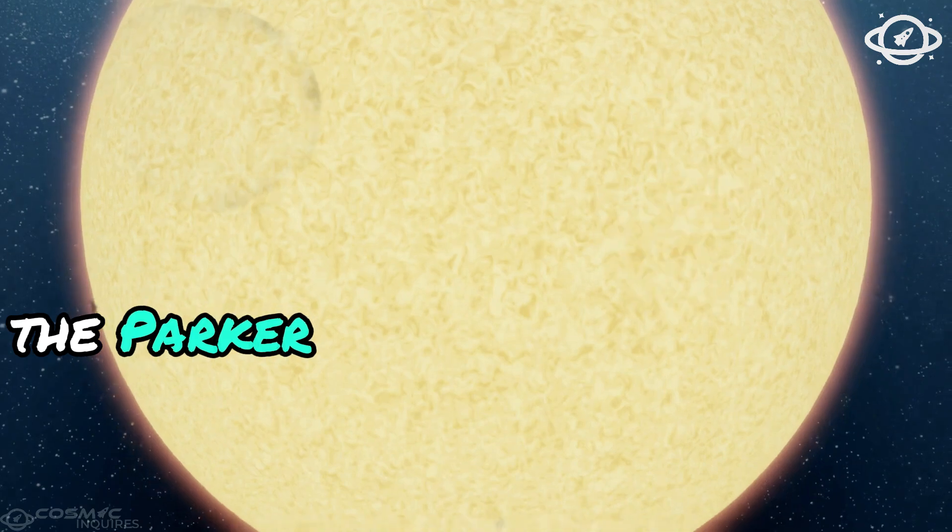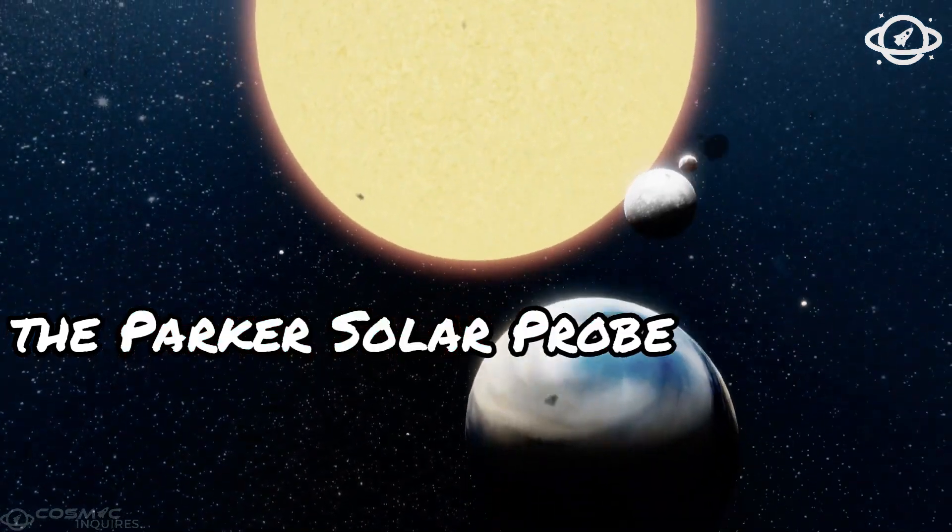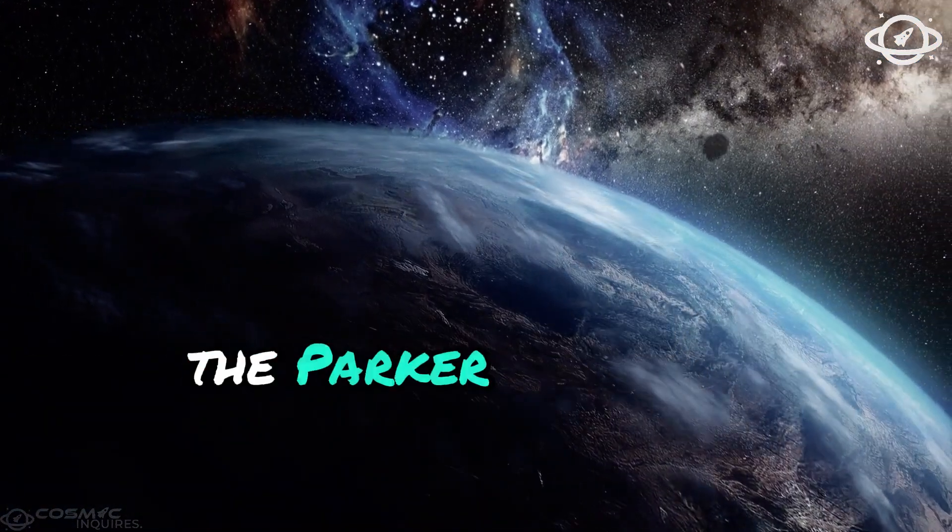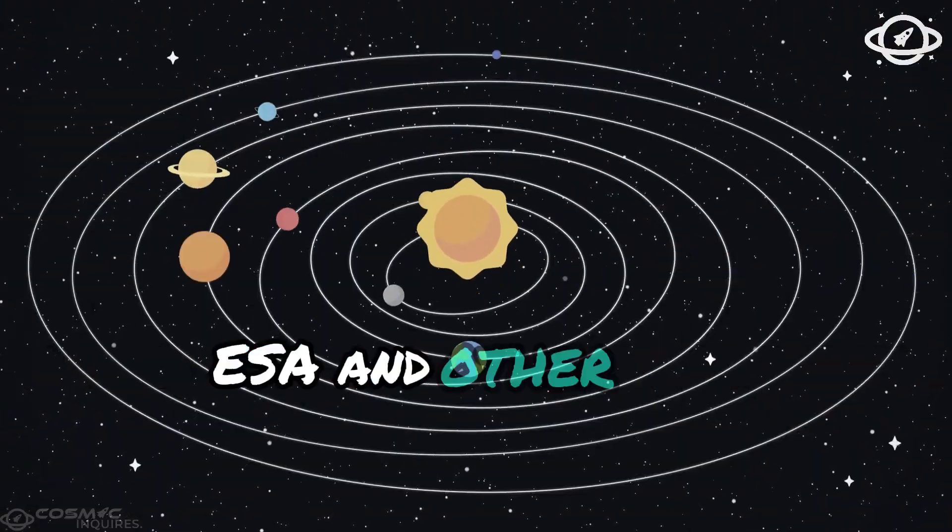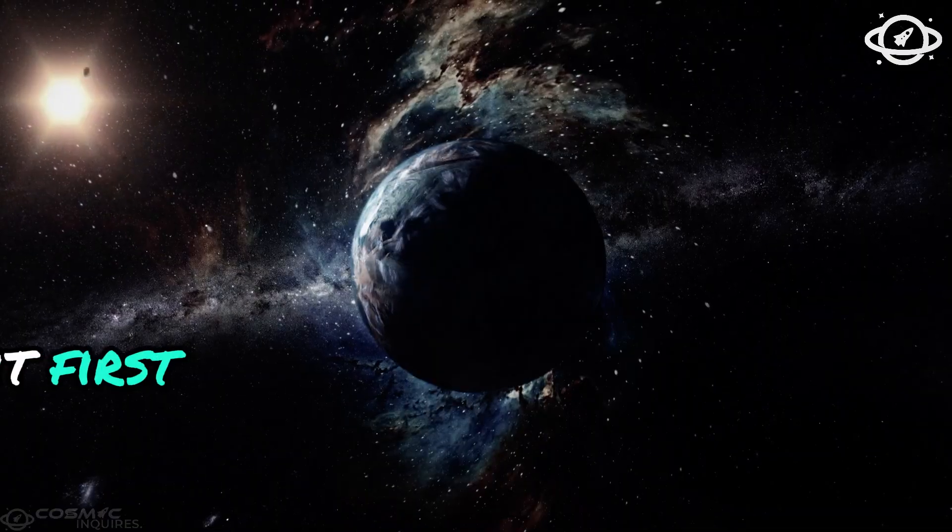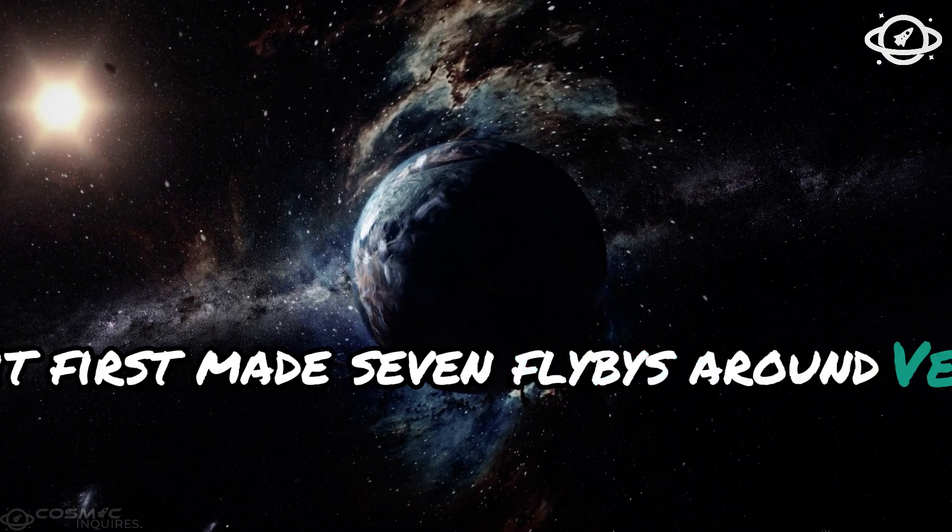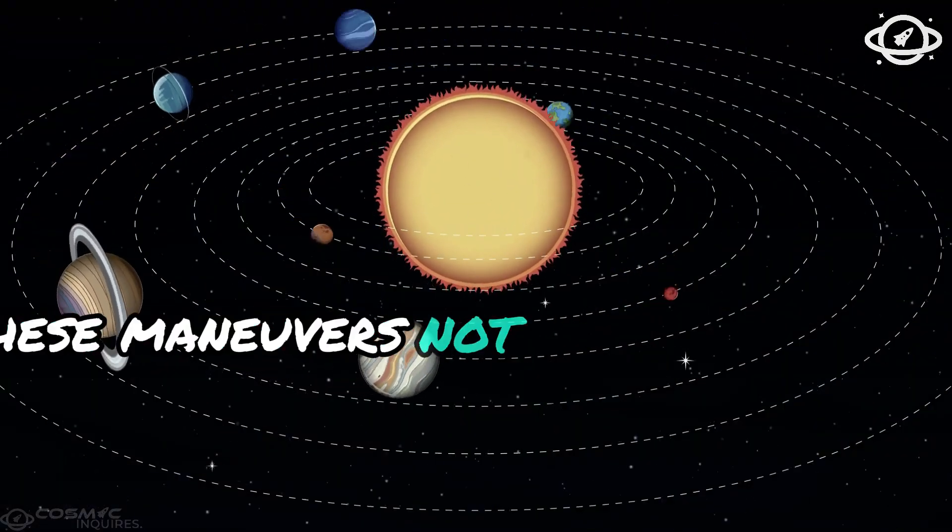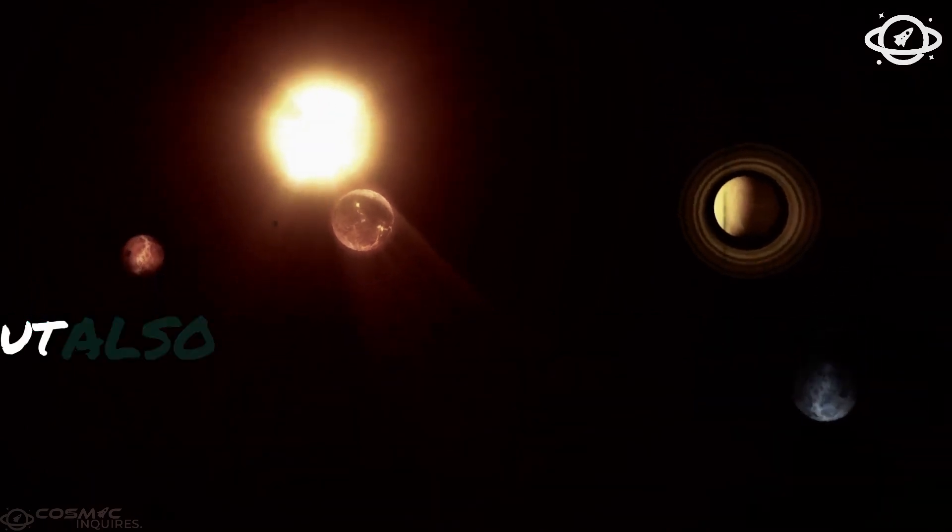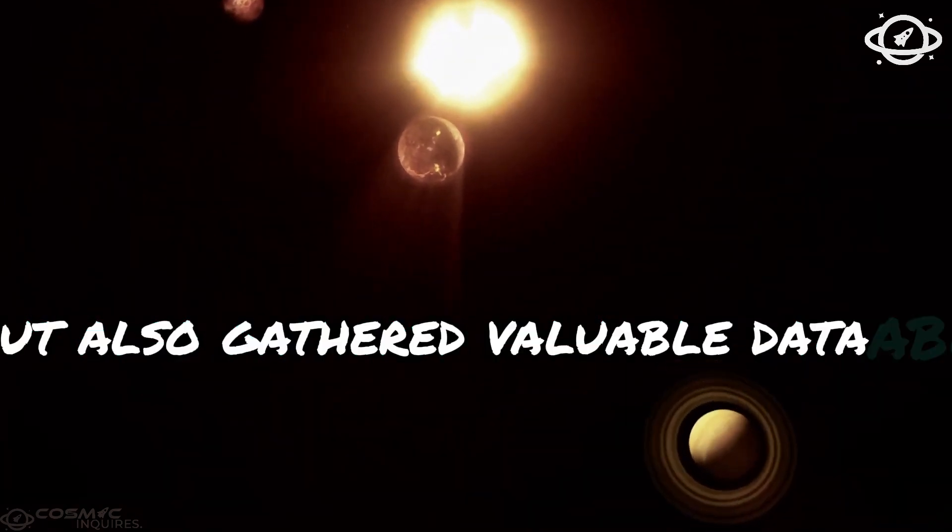The Parker Solar Probe. Launched in August 2018, the Parker Solar Probe is a collaborative effort between NASA, ESA and other nations. It first made seven flybys around Venus, before setting course for the Sun. These maneuvers not only positioned the probe, but also gathered valuable data about Venus.